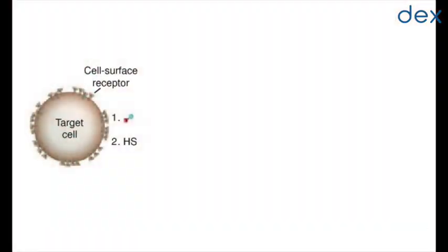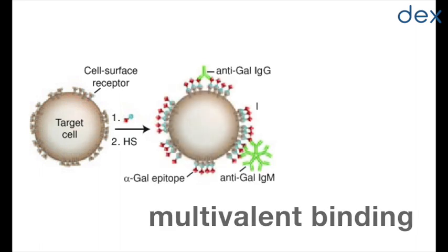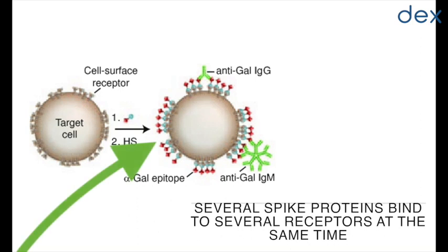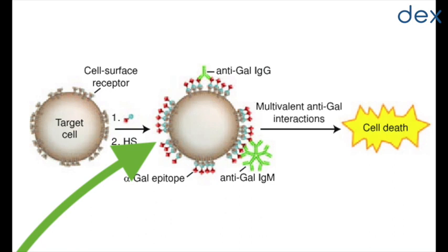To further help viruses infect host cells, they take advantage of a principle known as multivalent binding. This is when several spike proteins bind to several receptors at the same time. With that, viruses can more successfully enter host cells.